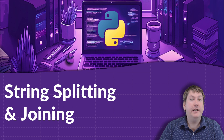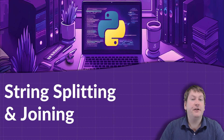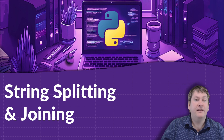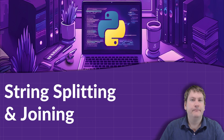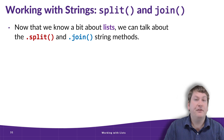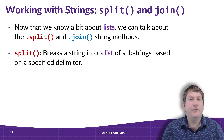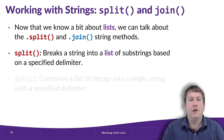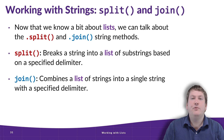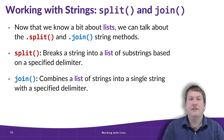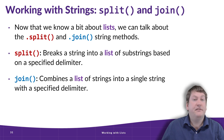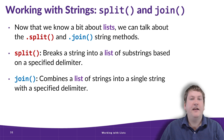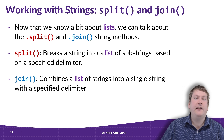In this video, we're going to be taking a look at the split and join methods in Python. These are two very powerful methods that we can start utilizing now that we know a little bit about both lists and strings. Split breaks a string into a list of substrings based on a specific delimiter, whereas join combines a list of strings into a single string with a specified delimiter. We can see these as complementary methods.